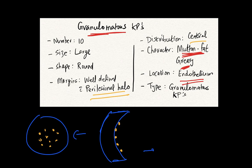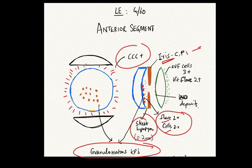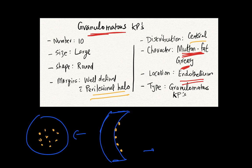The anterior chamber showed two important features: anterior chamber flare was 2+ and anterior chamber cells were 2+. There was also a streak hypopyon — a very small hypopyon, which is very unusual for toxoplasmosis. The iris was normal, the lens was normal with some lens deposits. The anterior vitreous face showed 3+ cells just behind the lens, and a vitreous flare of 2+, indicating vitritis — inflammation in the vitreous.